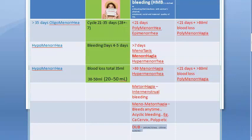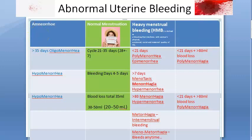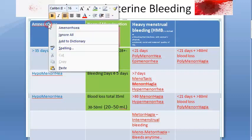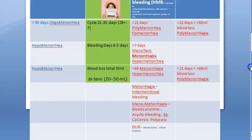Another terminology is amenorrhea, where there is no menstruation. This can be primary — occurring before puberty — or secondary, where menstruation happens and then stops, such as in pregnancy. These are additional terminologies useful to know.